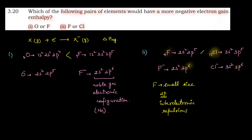So the answer for the second part is Cl — chlorine. In the pair of fluorine and chlorine, chlorine's electron gain enthalpy is more negative because of fluorine's small size and increased inter-electronic repulsions in its 2p orbital. I hope this question is clear to you. We'll see you in the next question.